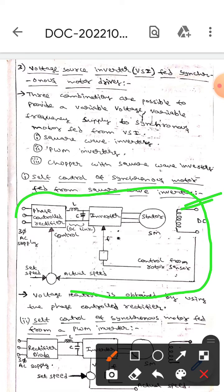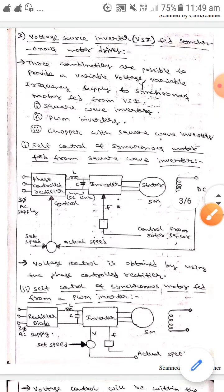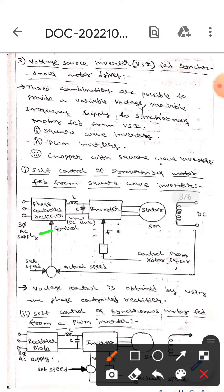This is the diagram. It represents the self-control of synchronous motor fed from square wave inverter. Here, if you observe, this is the phase control amplifier, this is the inverter, this one is a capacitor, this one is the DC link, and here this is the control from rotor sensor. Voltage control is obtained by using the phase control amplifier.